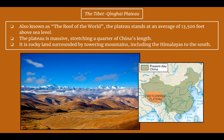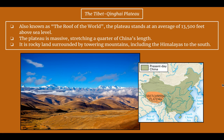Next we have the Tibet Qinghai Plateau, also known as the roof of the world. The plateau stands at an average of 13,500 feet above sea level. It is massive, stretching a quarter of China's length. It is a rocky land surrounded by towering mountains, which include the Himalayas to the south and mountains to the north as well. This image shows nicely here's the plateau in the foreground, and in the background you can see higher up are the towering mountains.